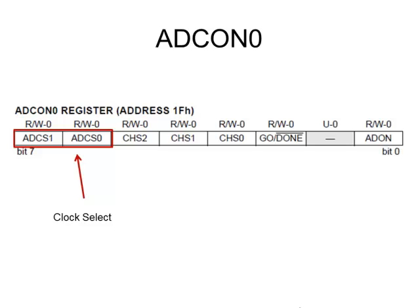Let's look first at the clock select bits. The A-to-D converter, just like a microcontroller, needs a clock pulse. Clock pulses keep everything in synchronization — like a drummer in a rock band keeps the whole band in sync so that everybody is strumming on the right beat. A microcontroller has its own clock signal that keeps all data transfers synchronized, and the A-to-D converter uses a clock signal as well. These two bits tell us how that clock is going to be configured.